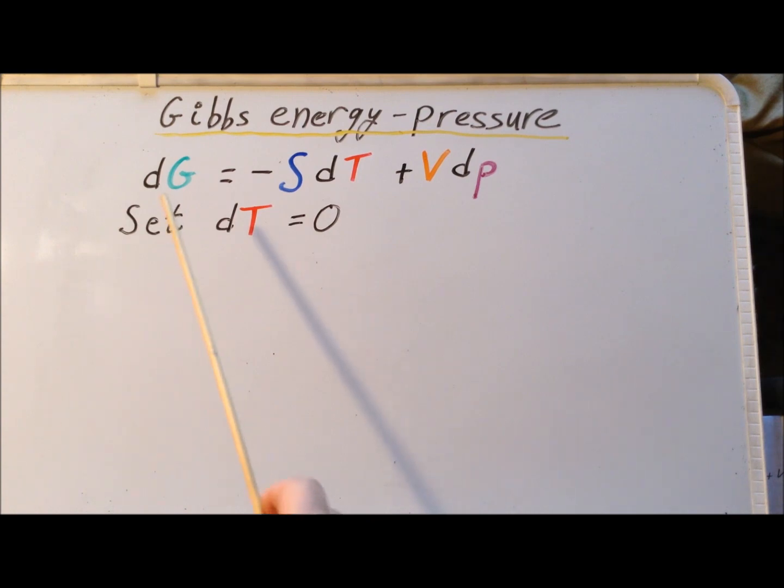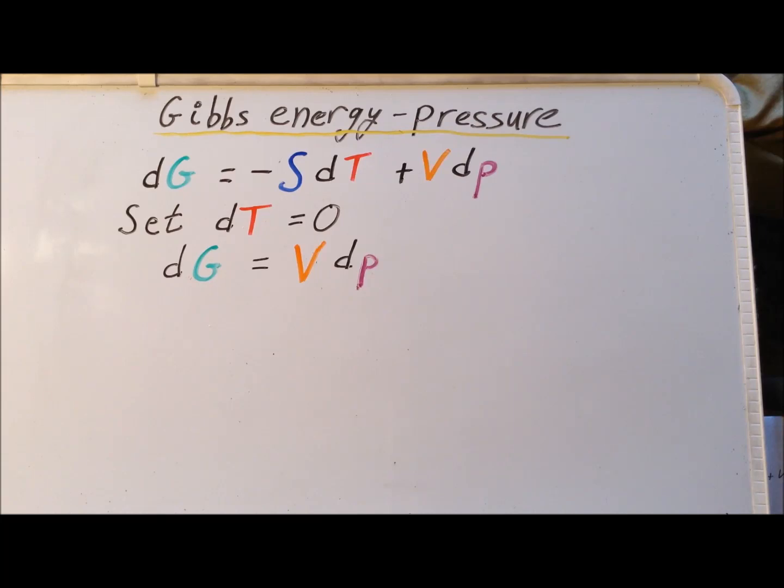This expression for the differential of G shows that it depends upon the temperature, T, and the pressure, P. So to isolate the pressure effect, let's set the change in temperature, dT, equal to zero. Now, under this specialized condition, we have specifically that dG is equal to VdP.